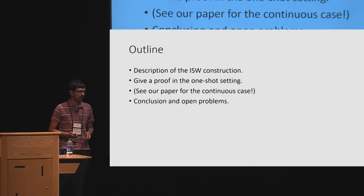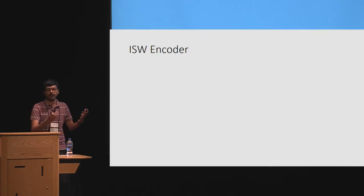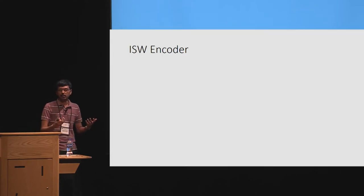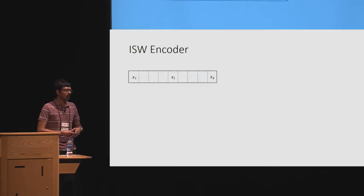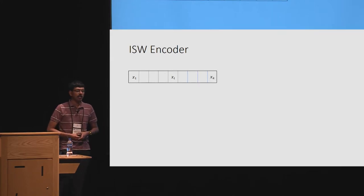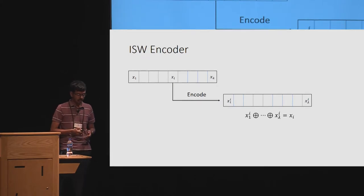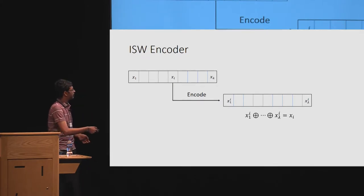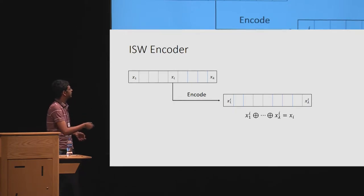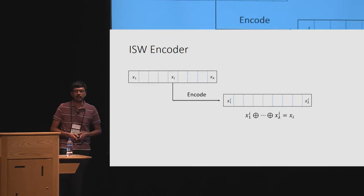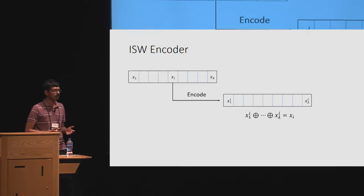Let's begin with the description of the ISW construction, starting with the encoder. Recall the encoder takes in some secret input and produces an encoded version. Let the secret input be X, which is k bits long. The encoding is simple: every bit of this secret input is encoded using a random string of length lambda whose parity equals that particular bit. So Xi is encoded using Xi1 through Xi_lambda, which are random bits whose parity equals Xi. This is done for every bit of the secret input.